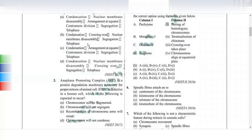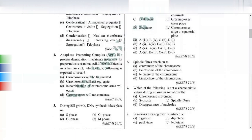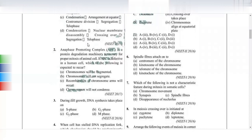Next question: Anaphase promoting complex (APC) is defective in a human cell. What would we expect? Very simple - if this complex is defective, chromosomes will not segregate. Option B is correct.